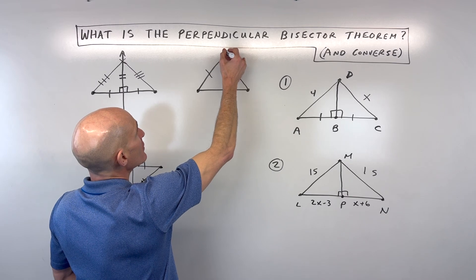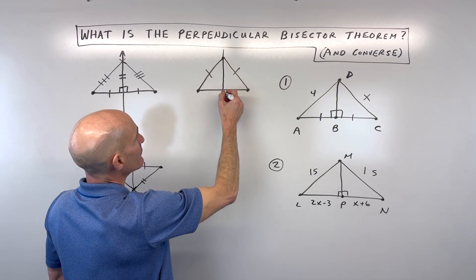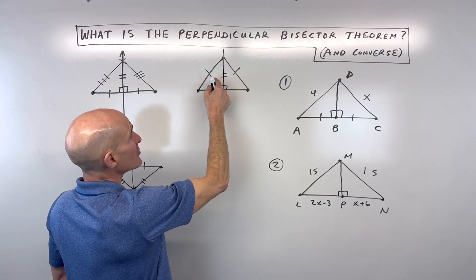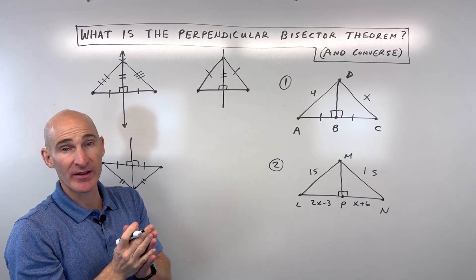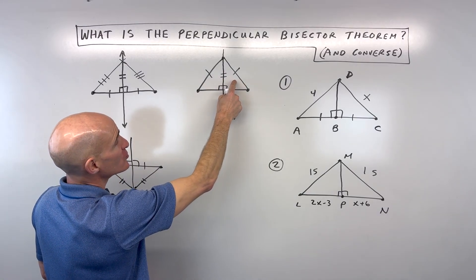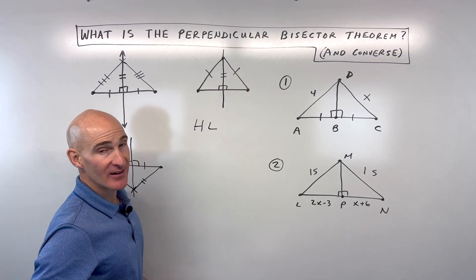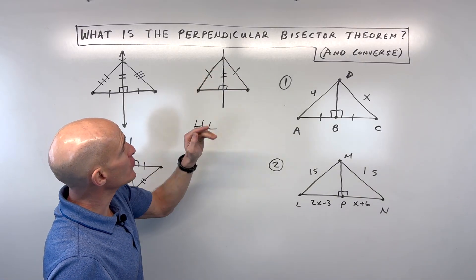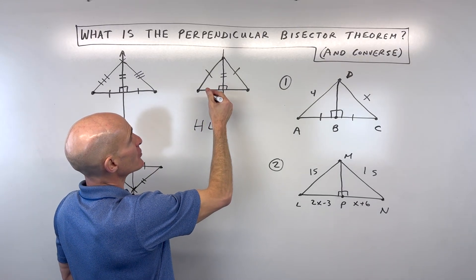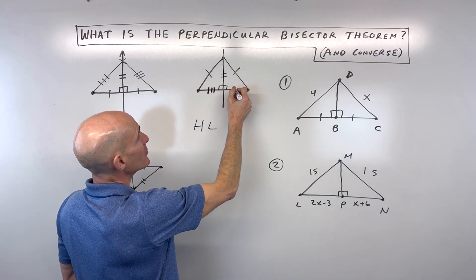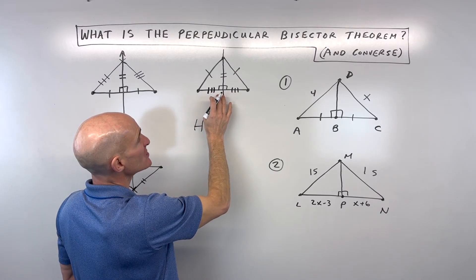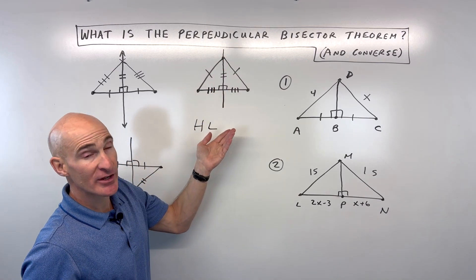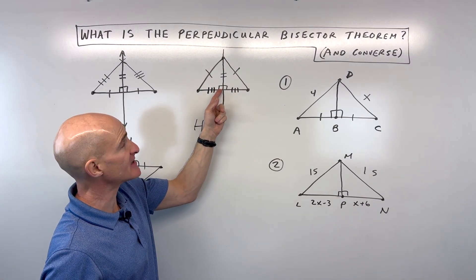If I drop a perpendicular — perpendicular means it's at a right angle — I know that the shared side is the same length in both triangles by the reflexive property. The two triangles are congruent by the hypotenuse-leg theorem. By CPCTC, the corresponding parts of congruent triangles are congruent, meaning these two segments are congruent, which means this line is a perpendicular bisector because it bisects — cuts in half — and is at a right angle.